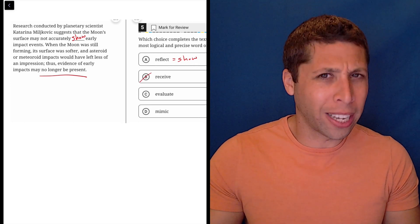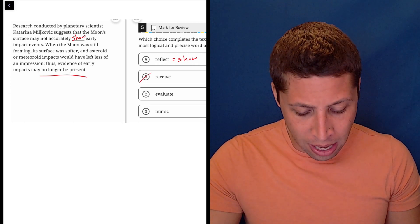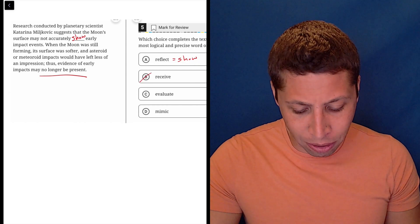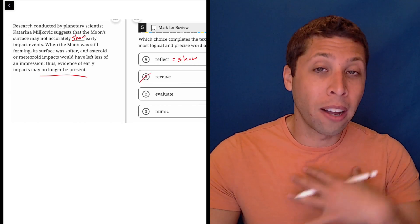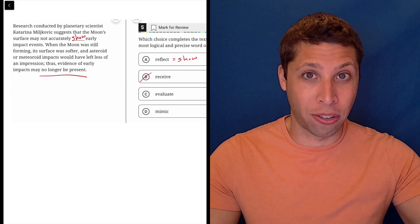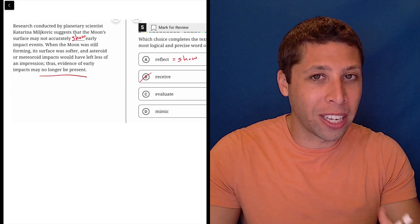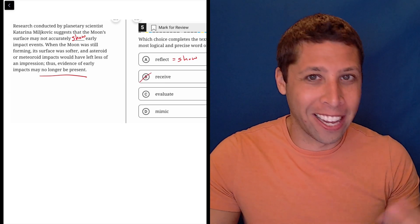So they were still getting hit by asteroids. The surface may not accurately evaluate early impact events. No, no, no. We're evaluating whether the impacts are there. The moon itself cannot evaluate anything. It's a moon.